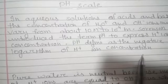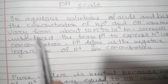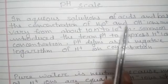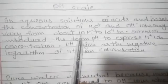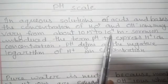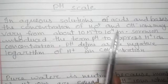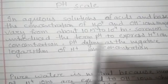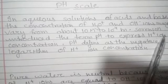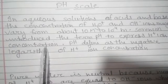pH means the power of hydrogen. In aqueous solutions of acids and bases, the concentration of H3O plus and OH minus ions may vary from about 10 to power 10 M to 10 to power minus 14 M. Sorensen introduced the term pH to express the H plus ion concentration.